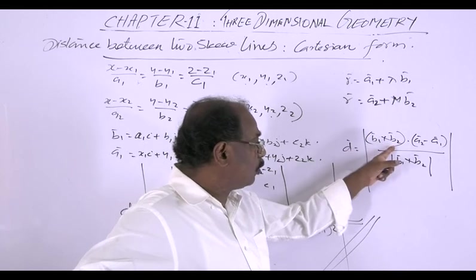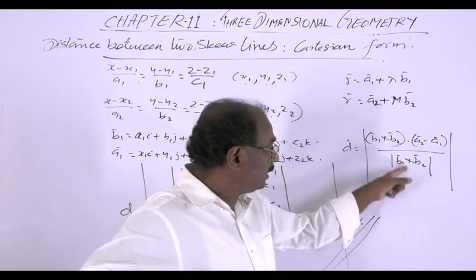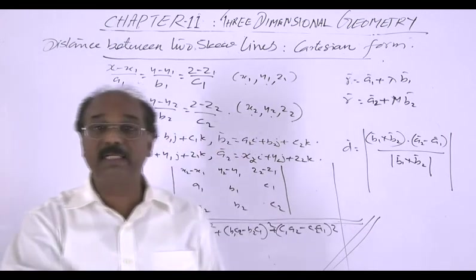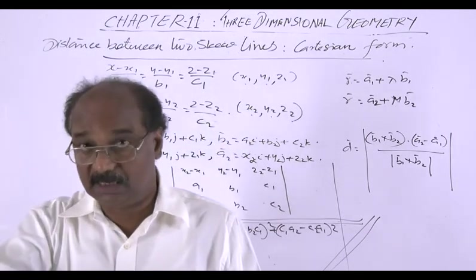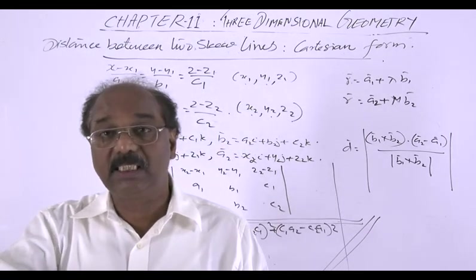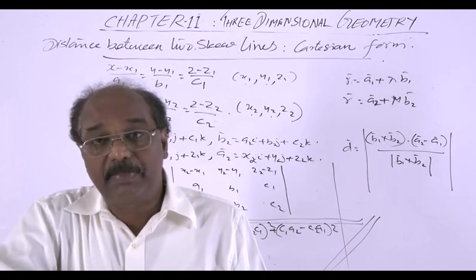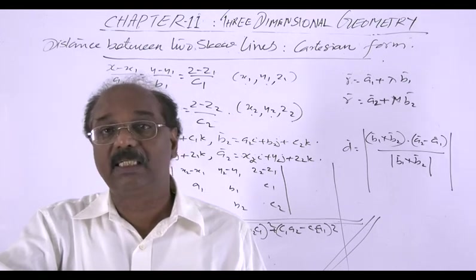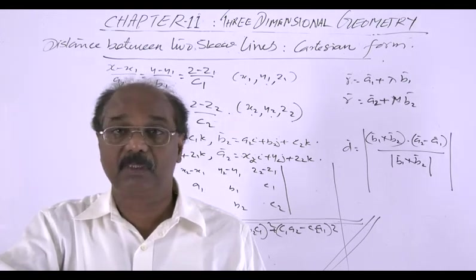Obtaining this v1 cross v2 and the a2 minus a1 and taking this fraction is very simple and left to you as an exercise. So this is the distance, the perpendicular distance between these two lines in the Cartesian form.